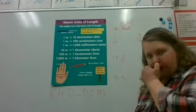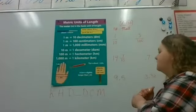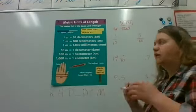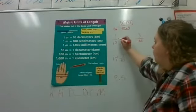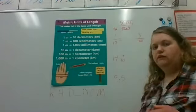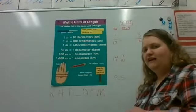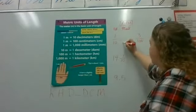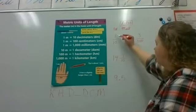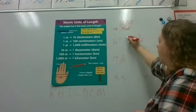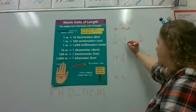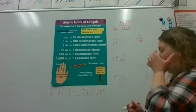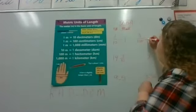Now we're going to review decimals — turning a fraction into a decimal and then turning a decimal back into a fraction. If we have one tenth, we place our decimal point and put the one in the tenths spot, which is the first place after the decimal. So one tenth is written as 0.1.